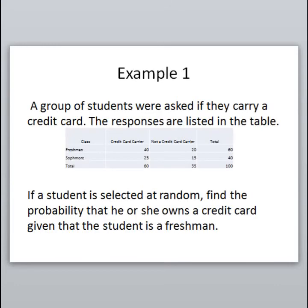The first example: a group of students were asked if they carry a credit card, and their responses are listed in a table with freshman and sophomore rows, showing how many in each class carry or don't carry a credit card, along with totals. The question asks: if a student is selected at random, find the probability that he or she owns a credit card given that the student is a freshman. That word 'given' is very important — we're establishing that the student is a freshman, so the only people we care about are the freshmen.